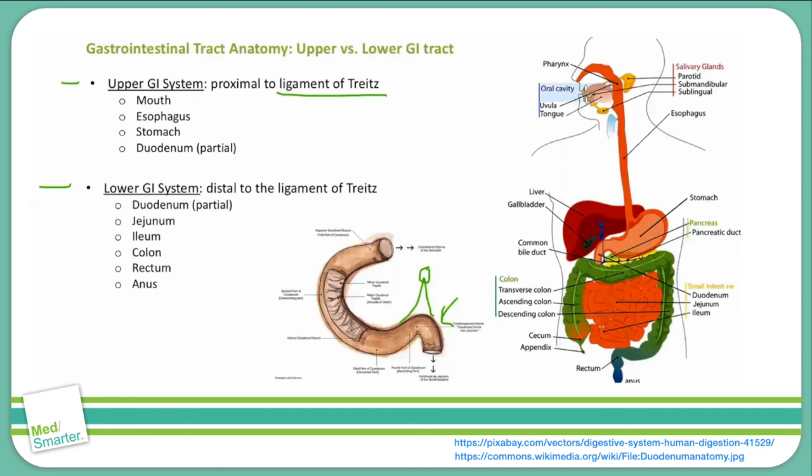Of course, there are other organs that are part of the GI system but not part of the GI tract, such as the salivary glands, pancreas, liver, and gallbladder, which we'll discuss in further videos.